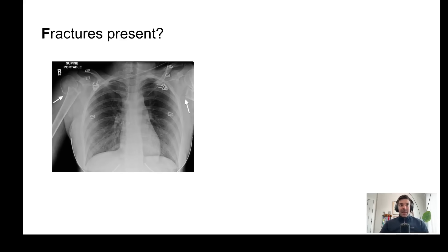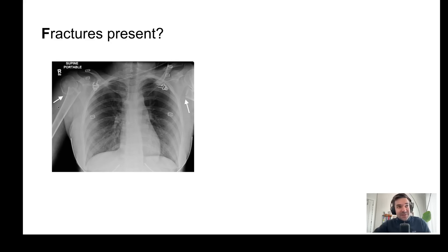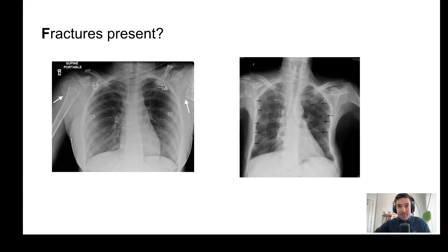Are there any obvious fractures? I find if I don't specifically look for them I might miss them. Here with the arrow sign you see a large humeral fracture, and this patient here has multiple rib fractures.